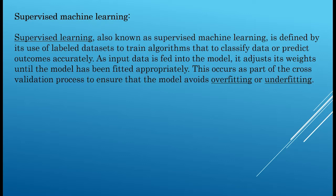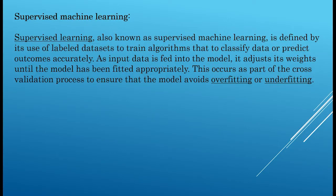This means that you have a data set with a target variable. For example, suppose you want to understand whether a customer will churn or leave a company. You have various features like the customer's account details and gender, and you train the model on those features and outcomes. Then you use that trained algorithm to predict on a test set where you have only the features as input, and as data is fed into the model it adjusts its weights until the model fits appropriately.